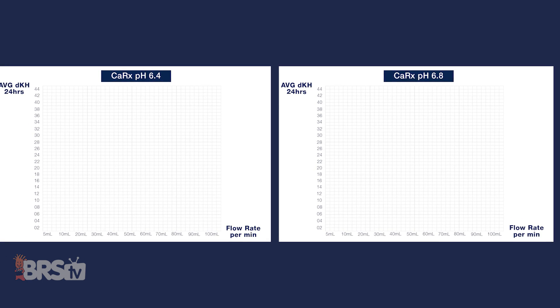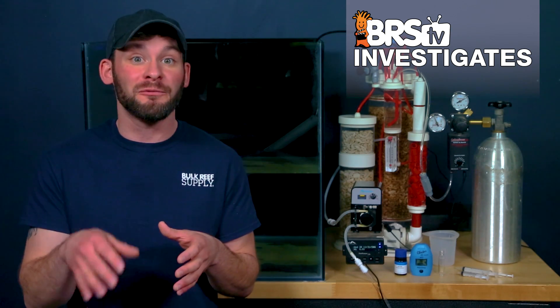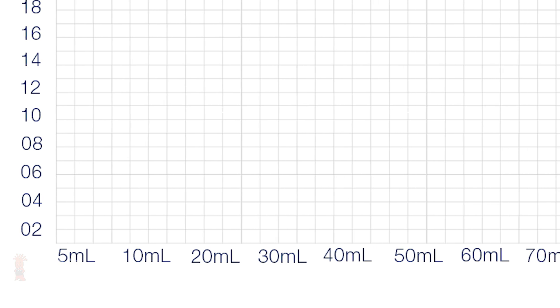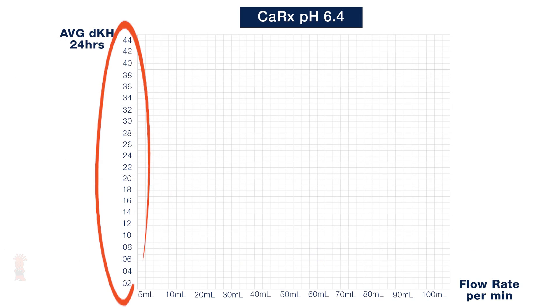To test this, we plan to measure the higher and lower end pH set points most commonly used by reefers — 6.4 and 6.8 — on our Vertex calcium reactor using Two Little Fishies Reborn Media. Since we determined in the last test what each of these pH set points provides for a stable effluent concentration in terms of alkalinity using a super low 5 mil per minute flow rate, we aim to see how cranking up that flow to 20, 40, 60, 80, and even 100 mils per minute will affect those max saturations. We'll peg the pH to both set points, test the effluent concentration after running each flow rate for 24 hours, and monitor for any changes from our baseline.